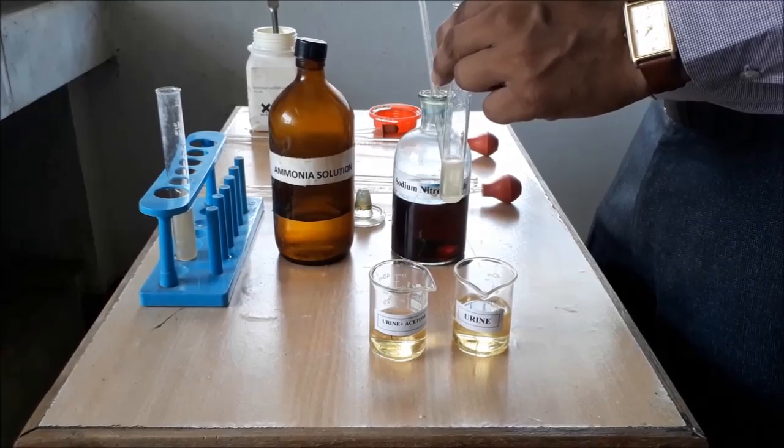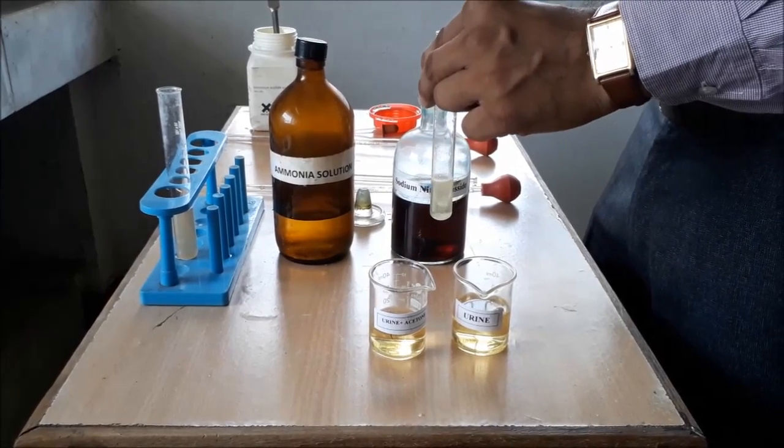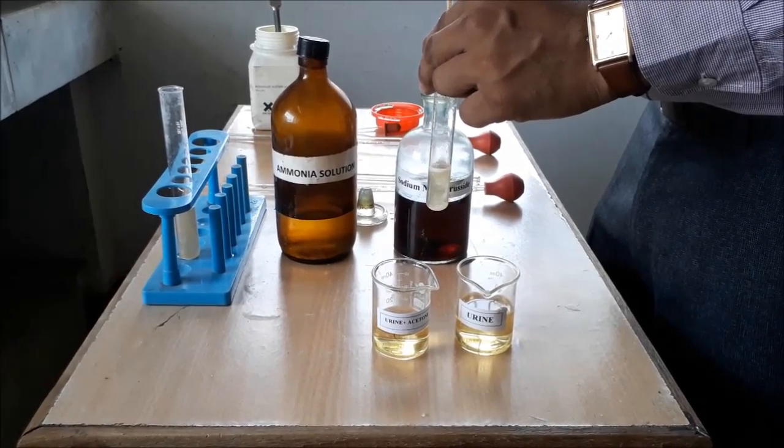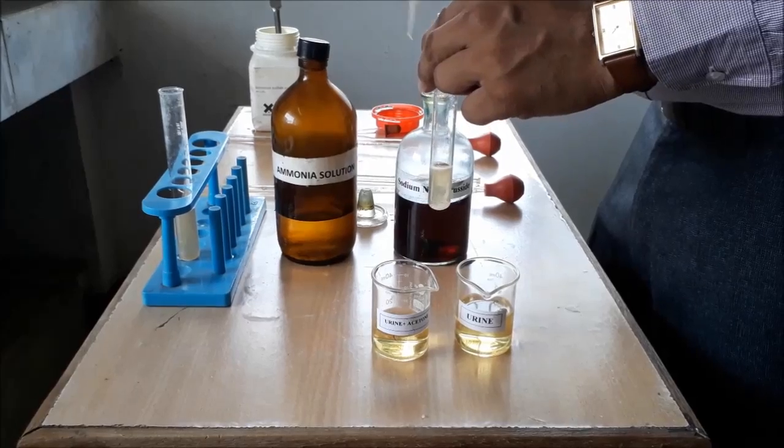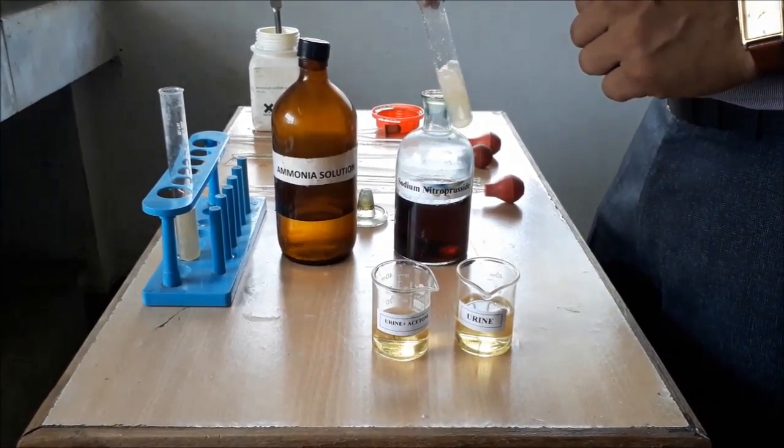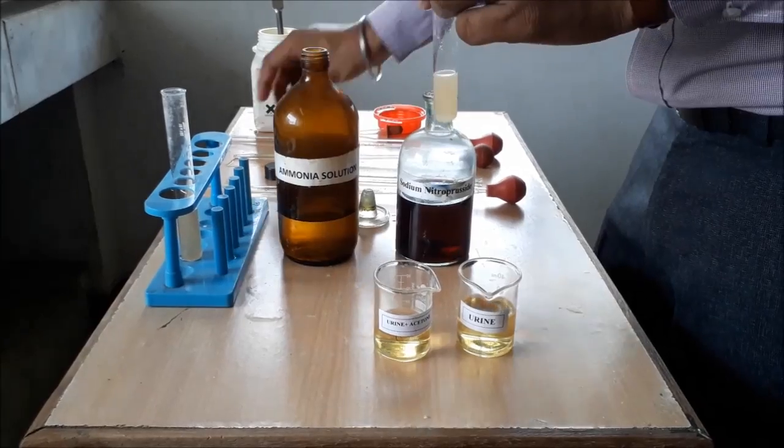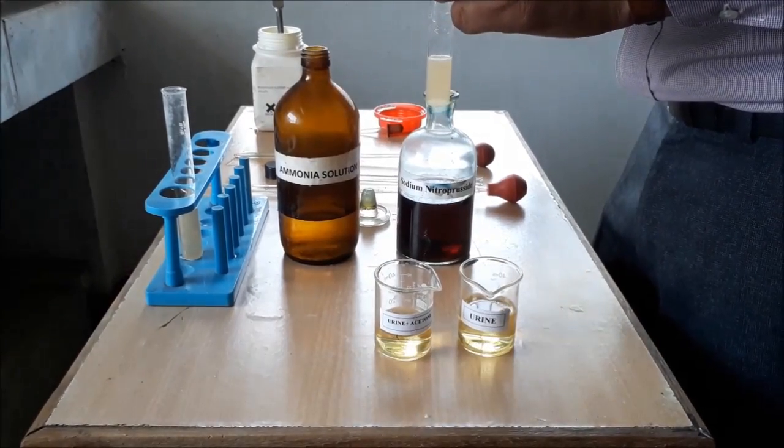Now, we are adding 2 drops of sodium nitroprusside with the help of pipette from the wall of test tube. After adding drops of sodium nitroprusside, we have to shake it a little bit.